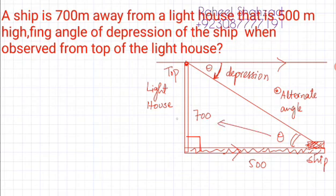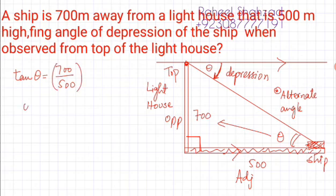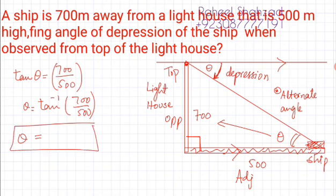In this triangle, the height is 700 meters and the horizontal distance is 500 meters. Opposite to theta is the perpendicular side (700m) and the adjacent side is 500m. Using trigonometric ratios: tan θ = 700/500, so θ = tan⁻¹(700/500), which gives θ = 54.5 degrees. This is the angle of depression of the ship as observed from the top of the 700 meter high lighthouse.